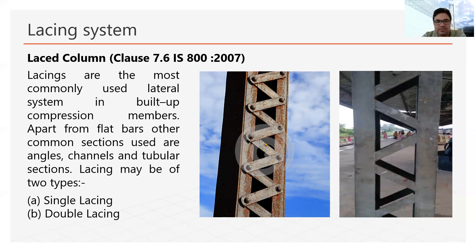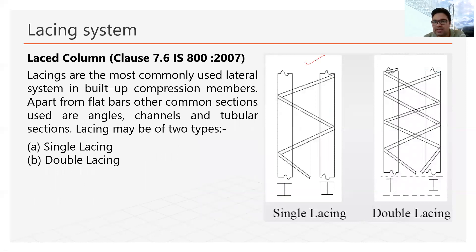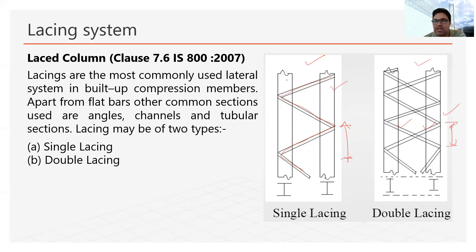In single lacing, a single bar runs between the main components — in one panel gap, only one bar is present. In double lacing, there are two bars in the same gap — one bar going one way and another bar crossing it. That is why it is called a double lacing system. We use double lacing when designing a built-up column to carry a very heavy load, and single lacing for lighter loads.